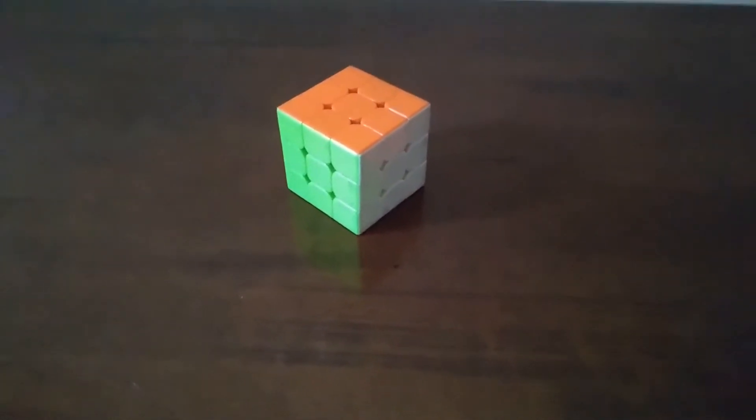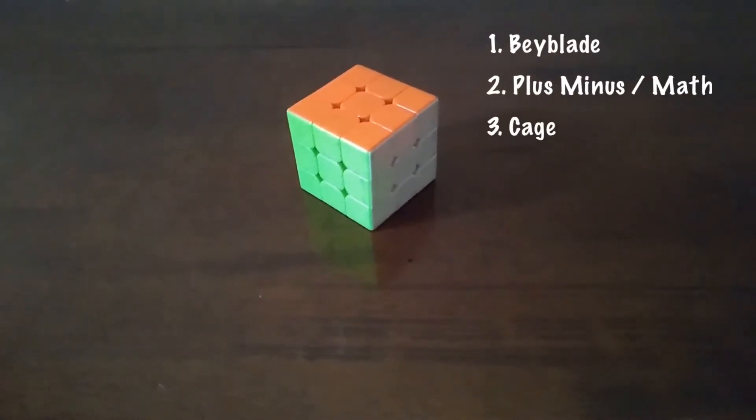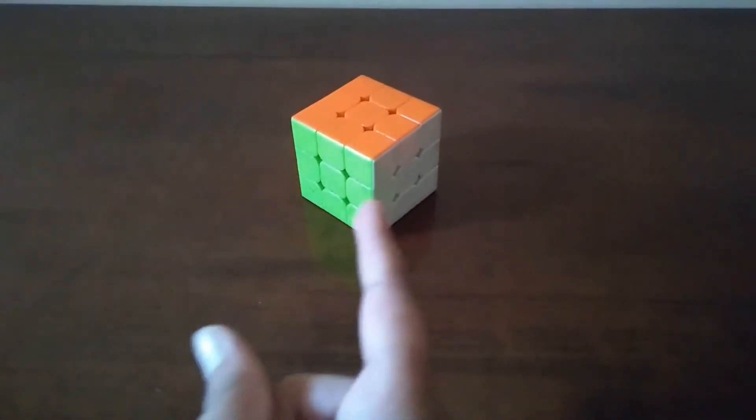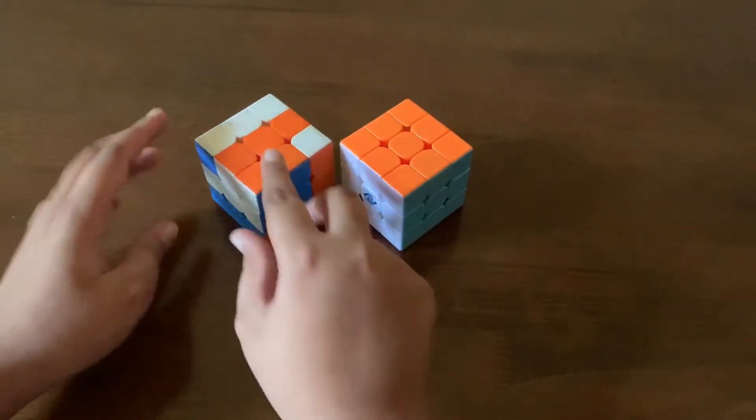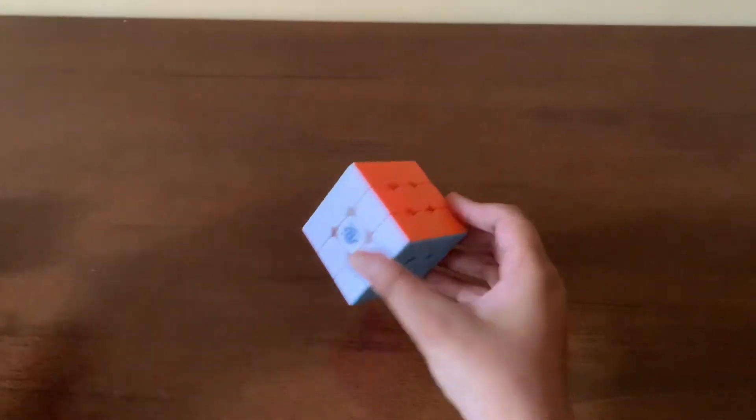So in this video, we are going to see how to do 3 patterns which is the babelit pattern, the plus and minus pattern and the cage pattern. So let's get started. First we are going to do the babelit pattern.